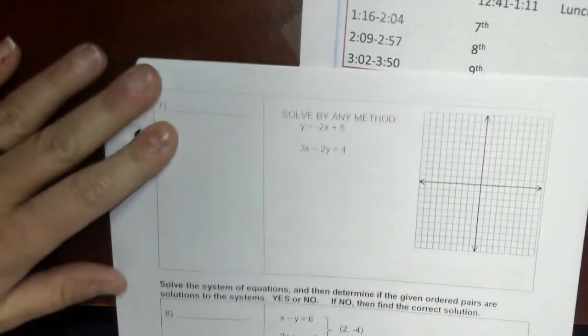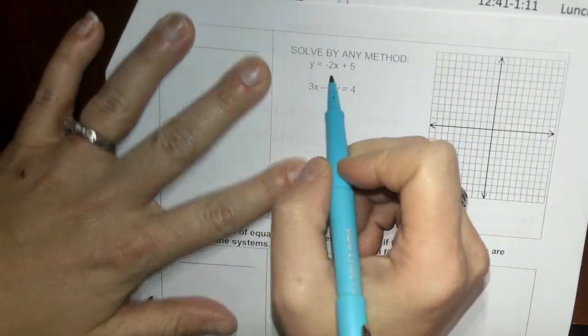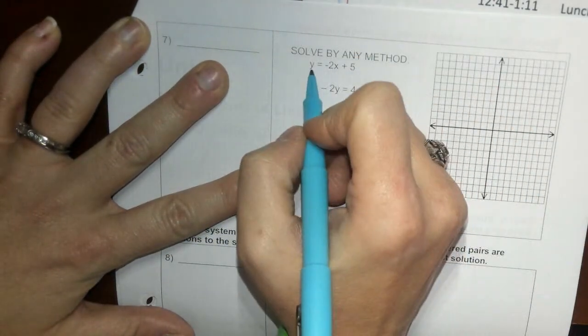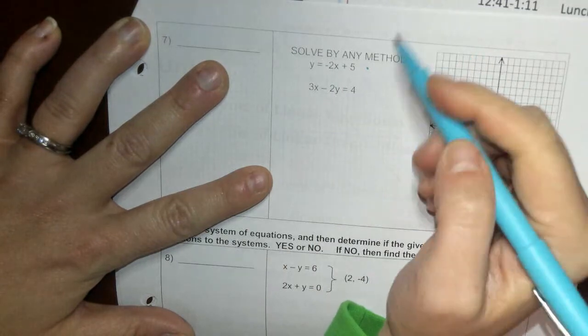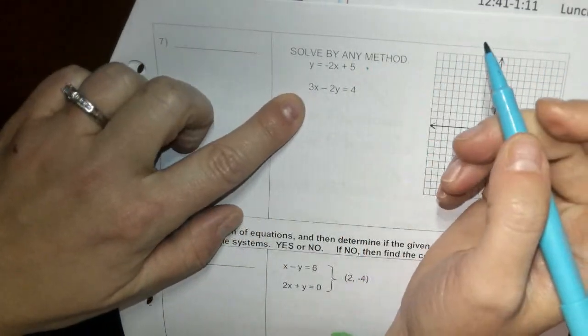Okay, let's go ahead and skip to number 7 where you can solve by any method. What I do when I look at this is I say, what do I have here? I have one thing in y equals, so that's good for substitution.